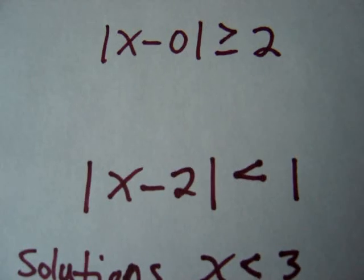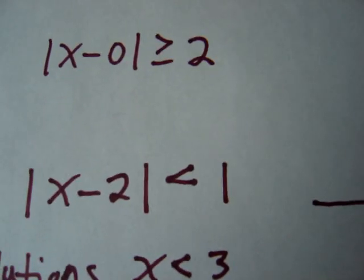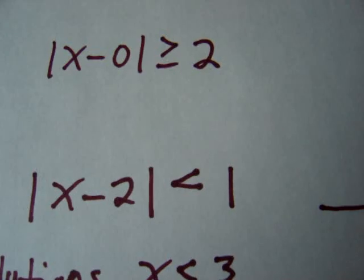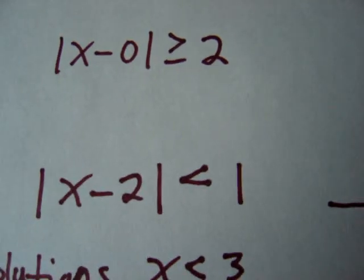Less than is an and, so the number line is going to be coming together.